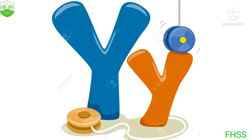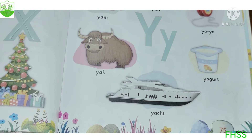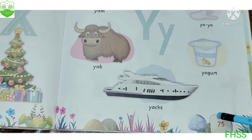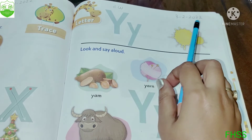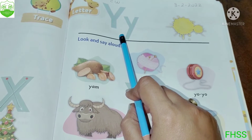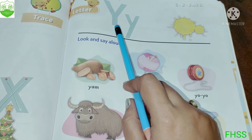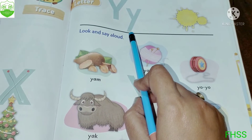Now children, all of you get ready with your literacy skill book. We will do some practice work. All of you turn to page number 75. Here your parents will write CW and today's date. Today we have learned about the letter Y — Mama Y, Baby Y. And the sound of Y is Y.